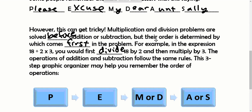But the order is determined by which comes first, meaning if it's multiplication or division, whichever one comes first in the problem. So, for example, in the expression 18 divided by 2 times 3, you would divide first, 18 by 2, and then multiply by 3.